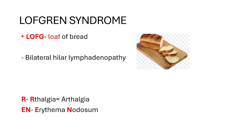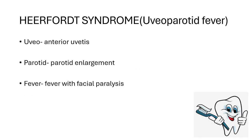The other syndrome is Heerfordt syndrome, also called uveoparotid fever. The name itself explains everything: 'uveo' refers to anterior uveitis — sarcoidosis affects the anterior part of the uvea. 'Parotid' stands for parotid enlargement, as sarcoidosis affects the salivary glands. 'Fever' refers to fever with facial paralysis. This is the triad of Heerfordt syndrome.